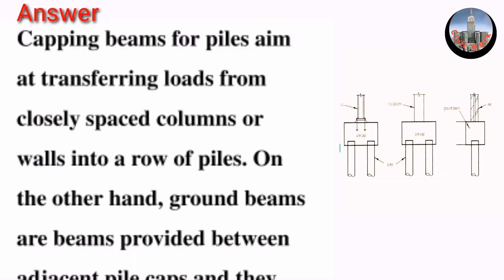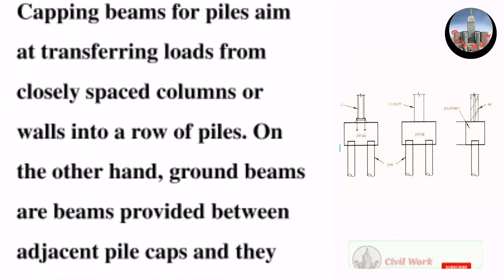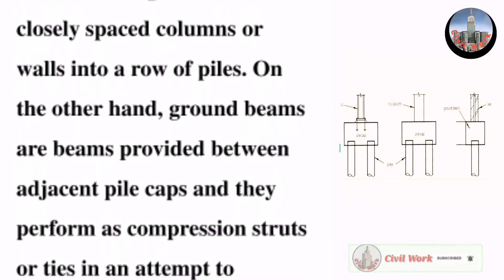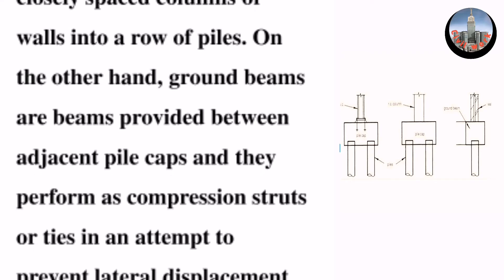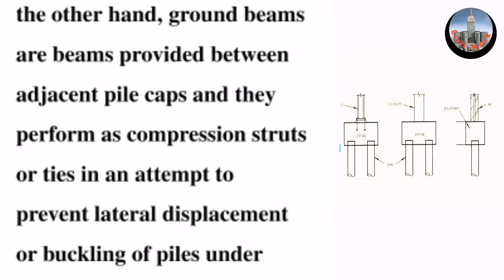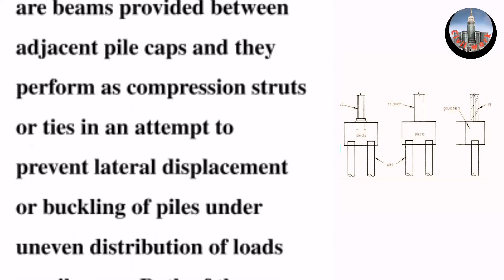Capping beams for piles aim at transferring loads from closely spaced columns or walls into a row of piles. On the other hand, ground beams are beams provided between adjacent pile caps and they perform as compression struts or ties.